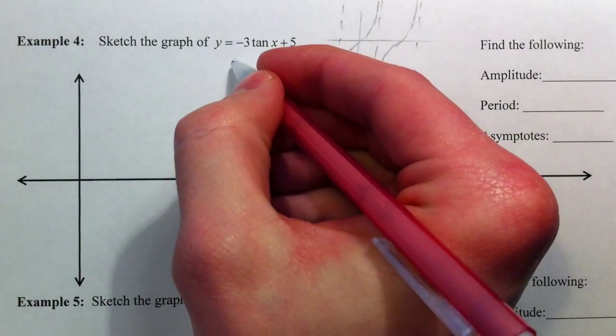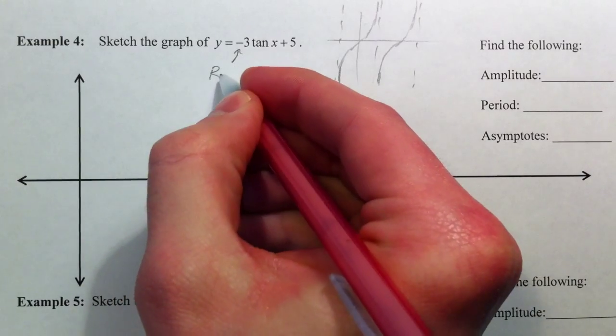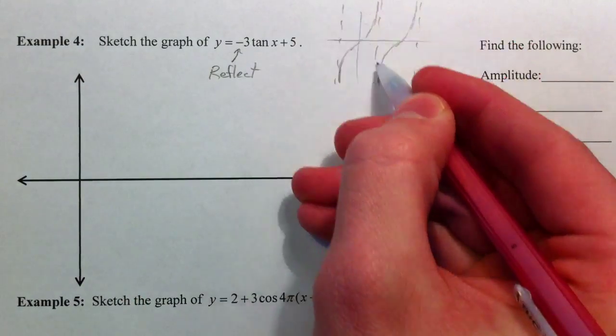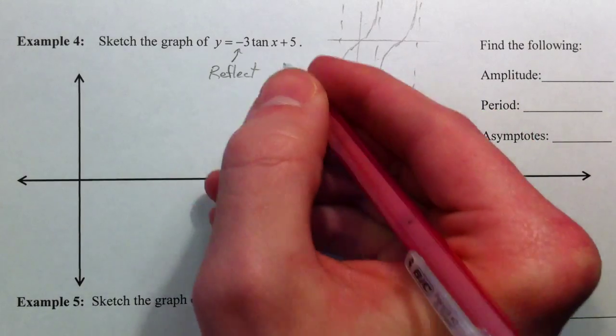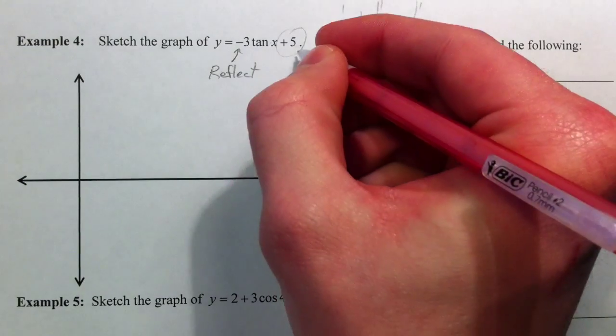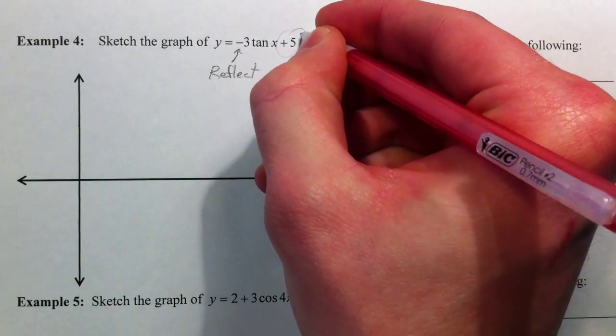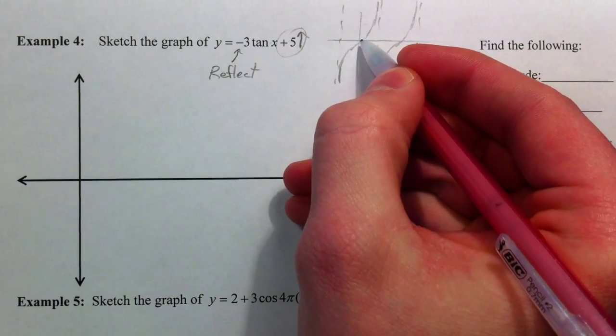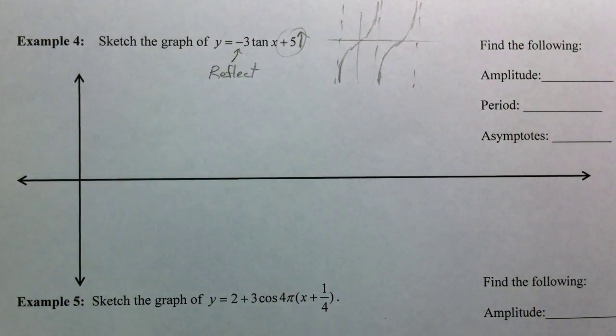And so this negative out in front is going to reflect that. And so instead of going up, it's going to be coming down. So, plus 5. Notice that it's not in parentheses with the x. And so that's actually going to cause it to go up 5. And so this dot is going to be centered up 5 more than where it is right now.